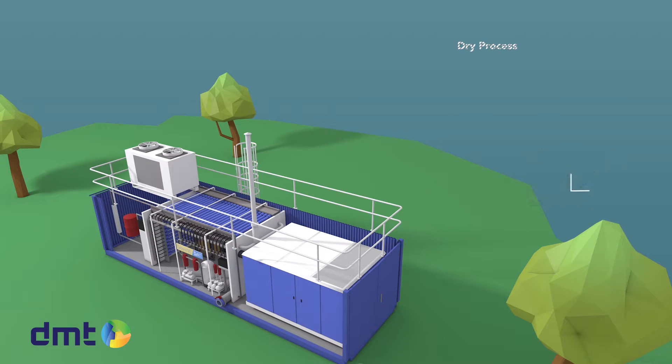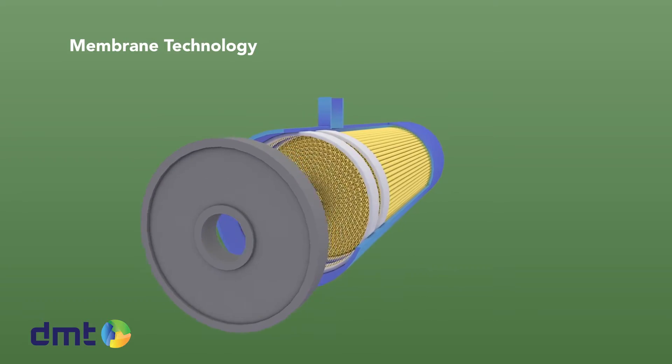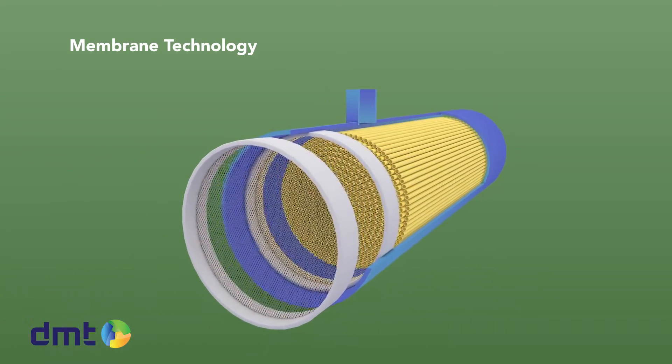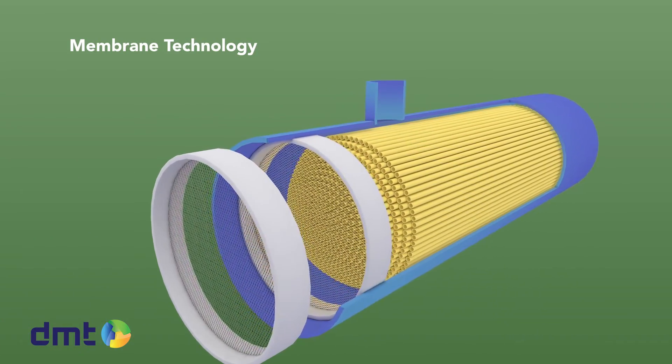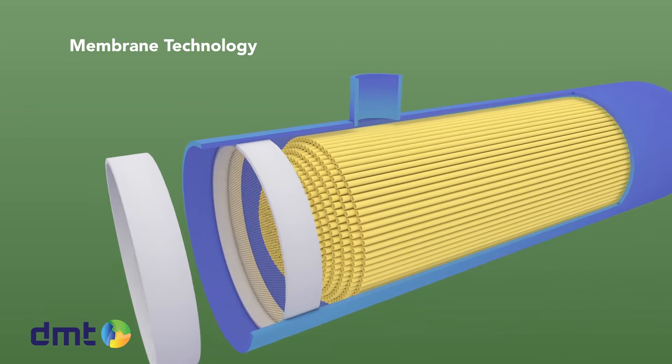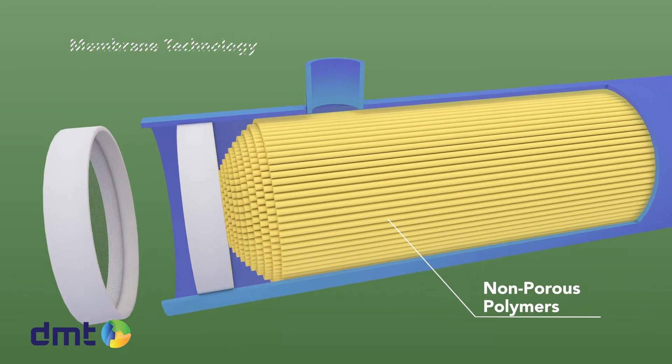The system is containerized, making it a plug-and-play system. The membranes inside the Carborex MS consist of hundreds of hollow fibers, resembling spaghetti. The hollow fibers are non-porous and made of polymers.